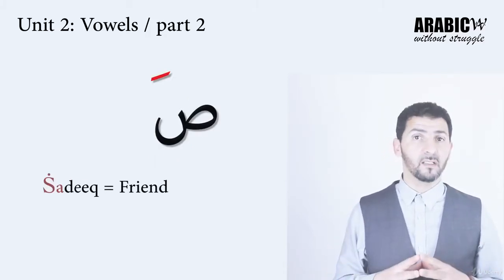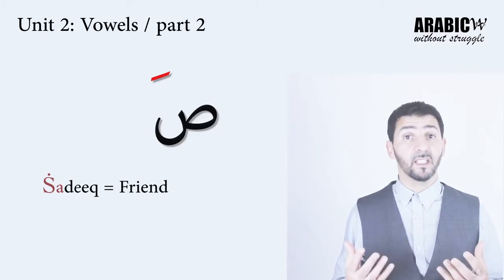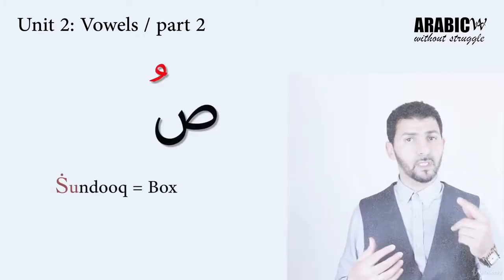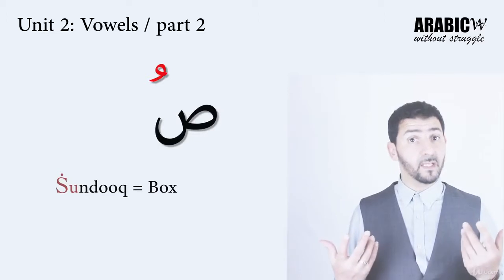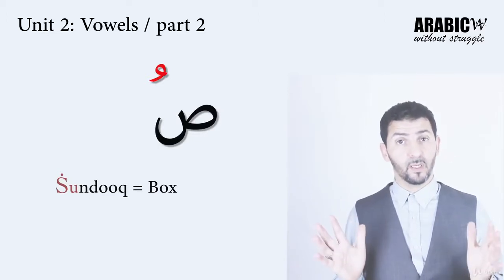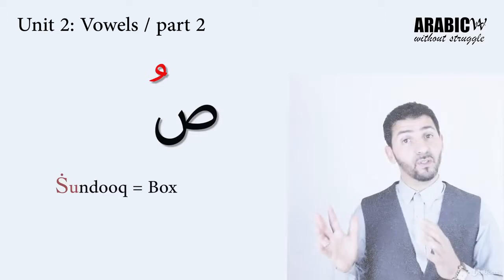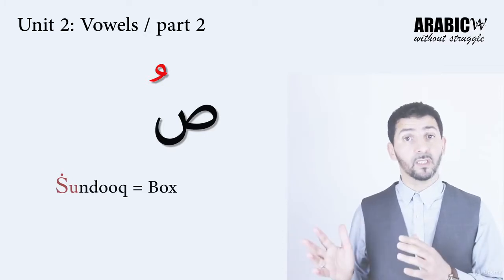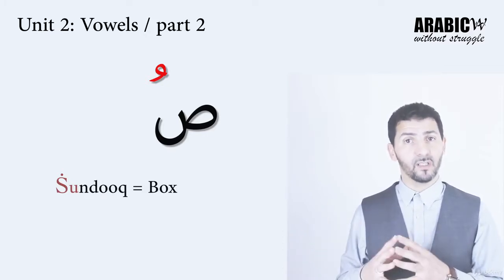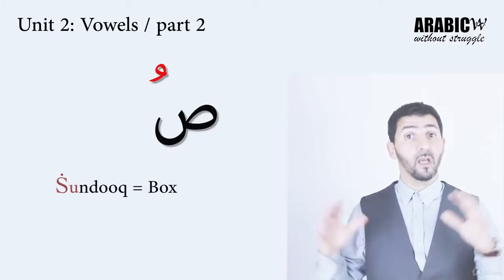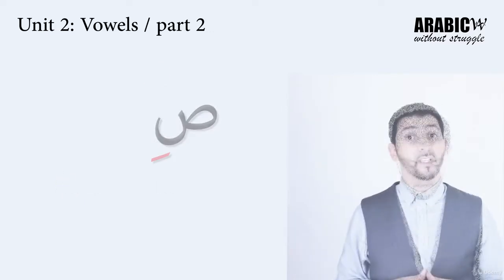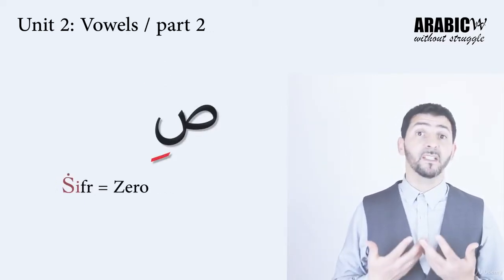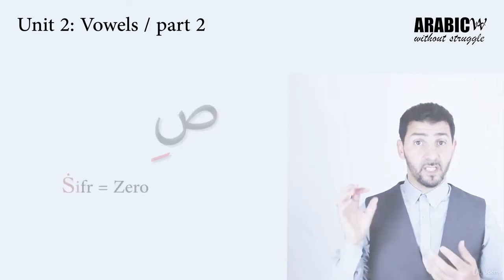صاد with فتحة makes صا, like صديق — meaning 'a friend'. صاد with ضمة makes صو, like صندوق — please don't confuse صاد with سين; it's not سو, it's صو. صندوق means 'a box'. صاد with كسرة makes صي, like صفر — meaning 'zero'.